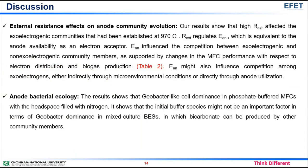Discussion — External resistance effects on anode community evolution: Our results show that high external resistance affected the exo-electrogenic communities that had been established at 971 ohms. External resistance regulates anode potential, which is equivalent to the anode's availability as an electron acceptor. Anode potential influences the competition between exo-electrogenic and non-exo-electrogenic community members, as supported by changes in MFC performance with respect to electron distribution and biogas production, as shown in Table 2.